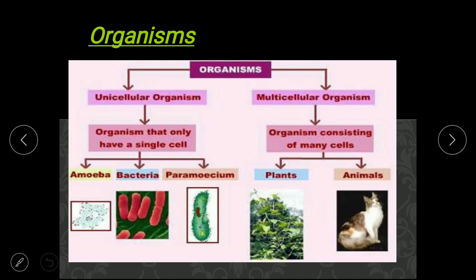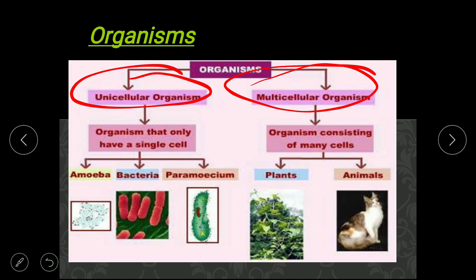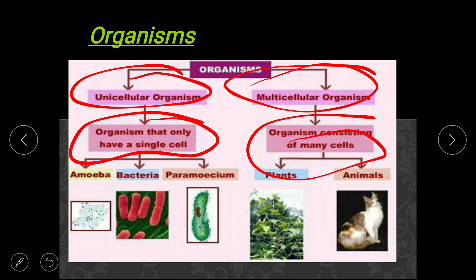Before discussing the body, we will first discuss organisms. According to cells, there are two kinds of organisms: unicellular and multicellular. Unicellular means a single cell animal — examples are amoeba, bacteria, and paramecium. Multicellular means made with the help of lots of cells — all kinds of animals and plants are multicellular.